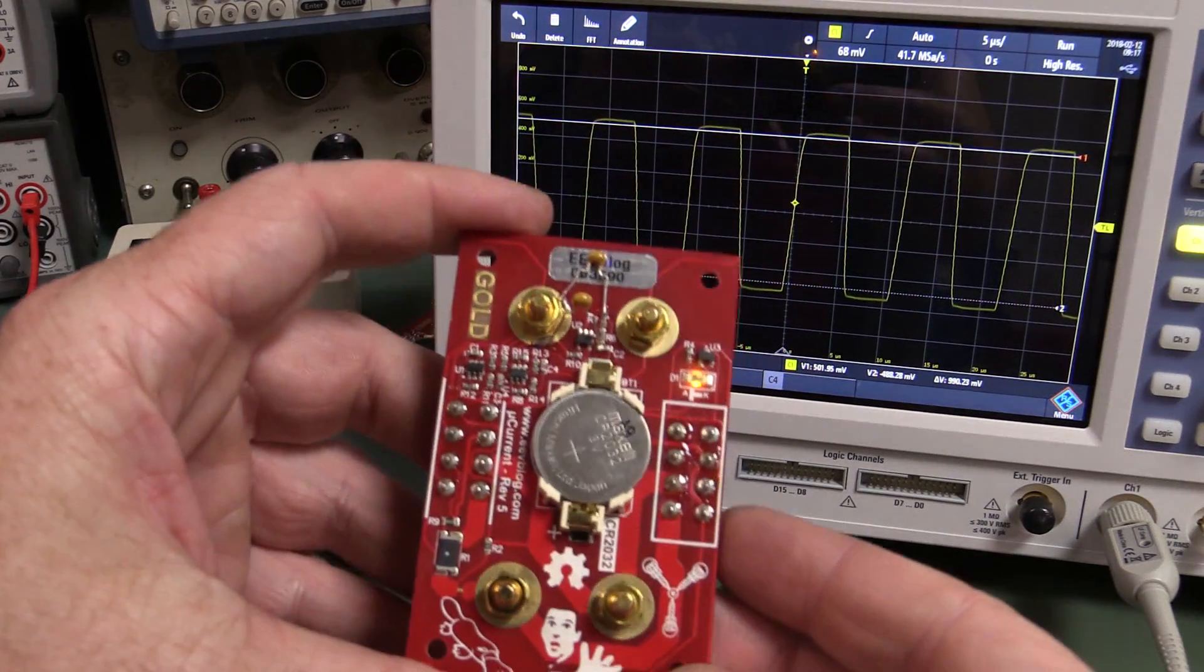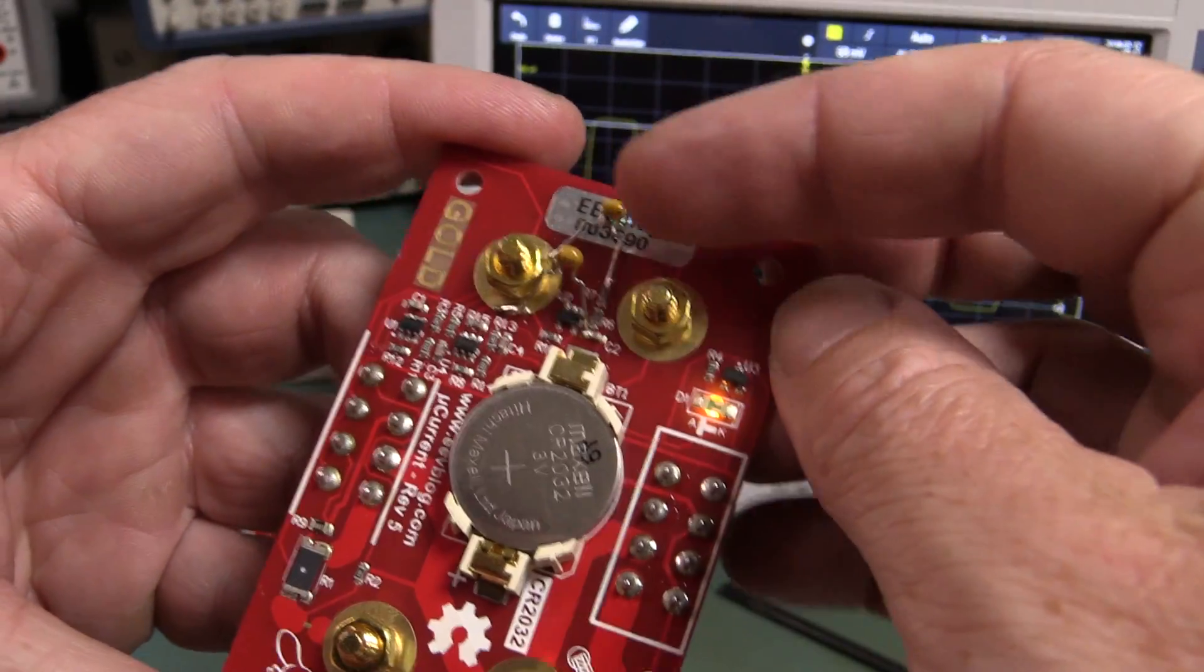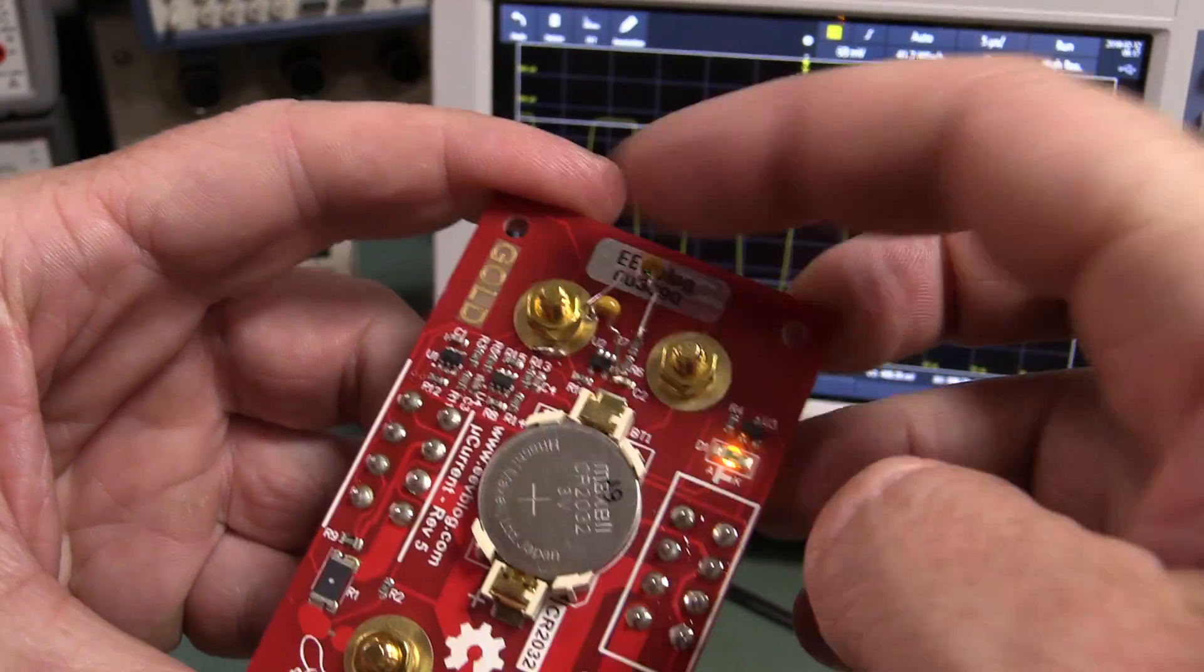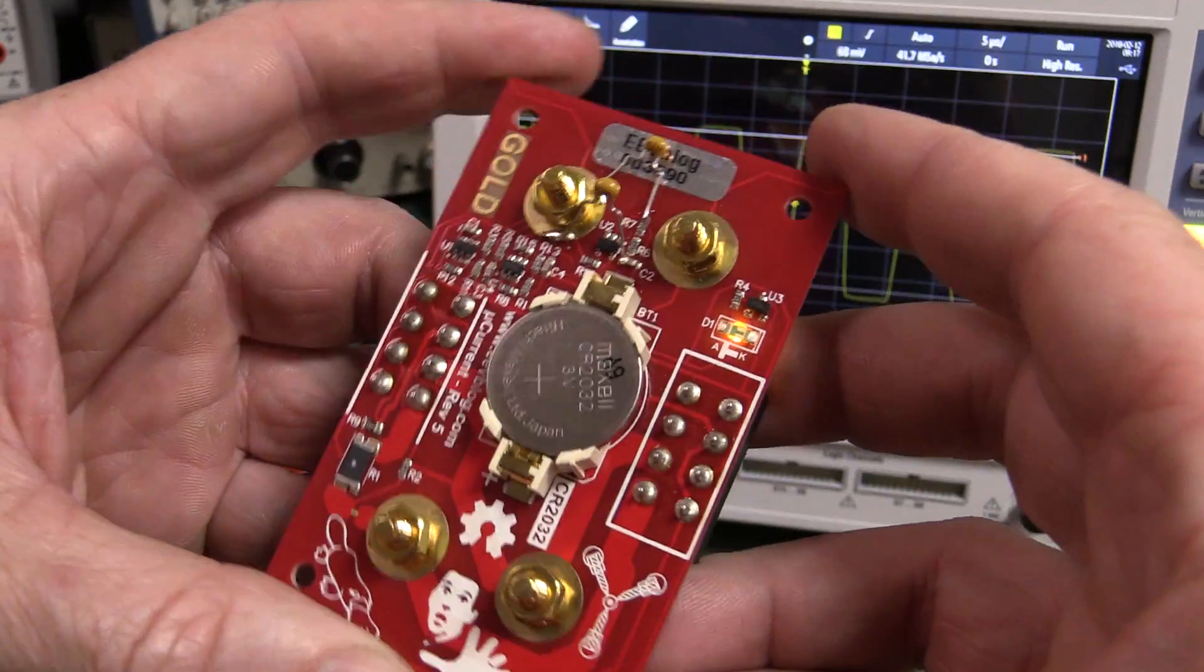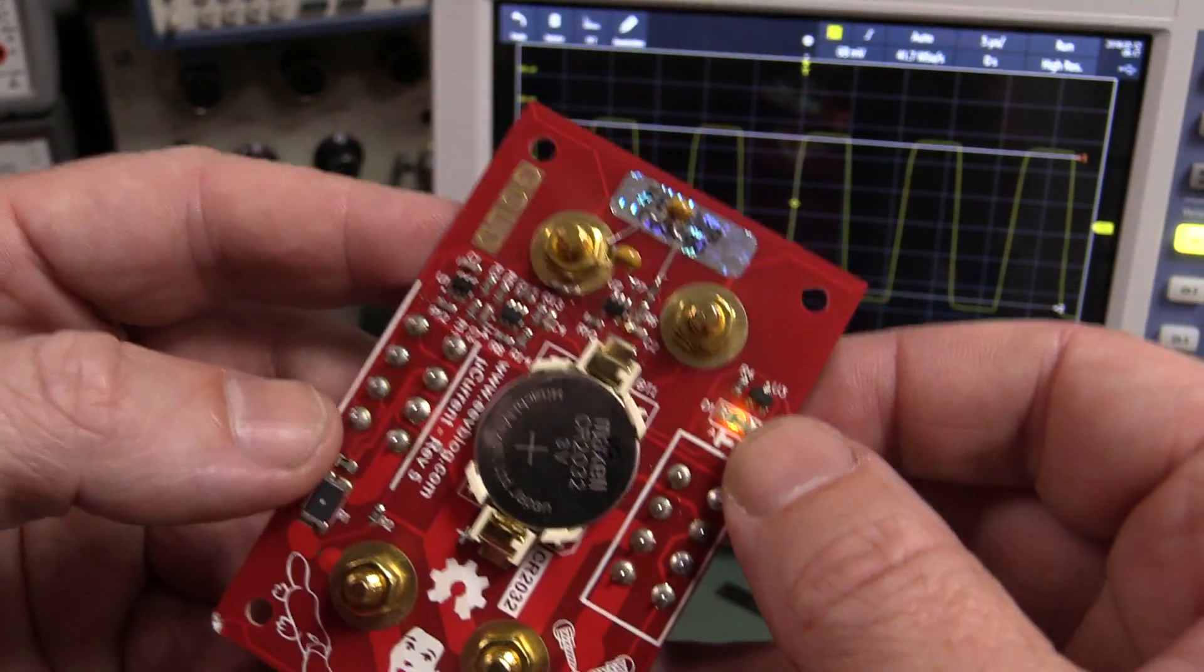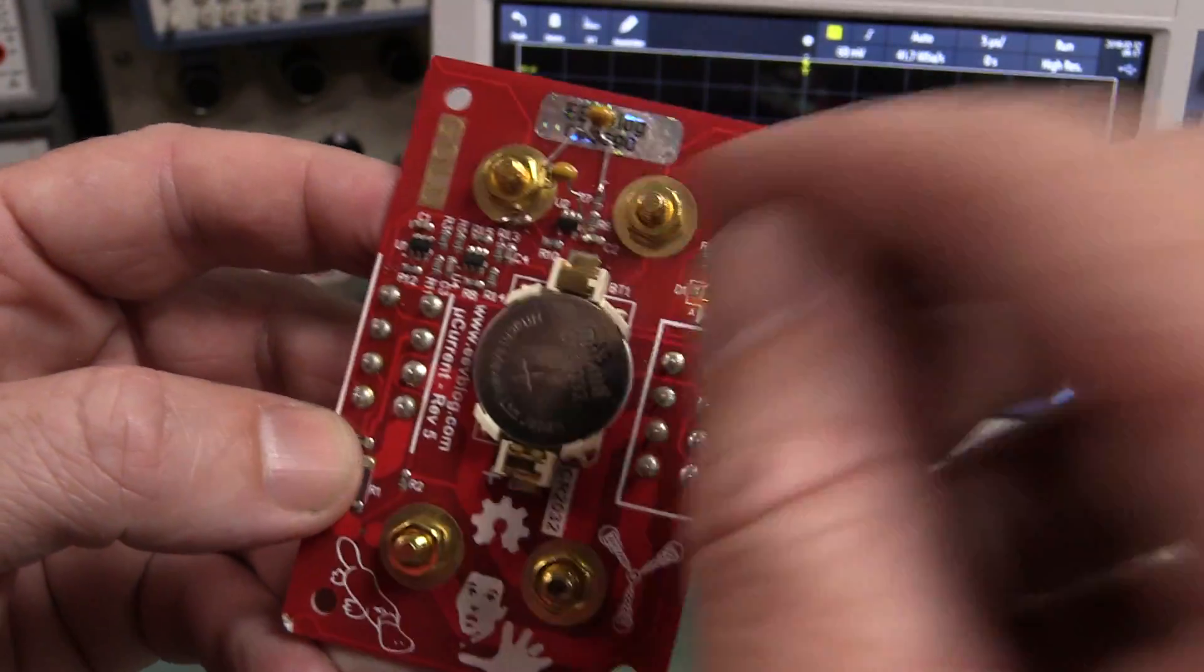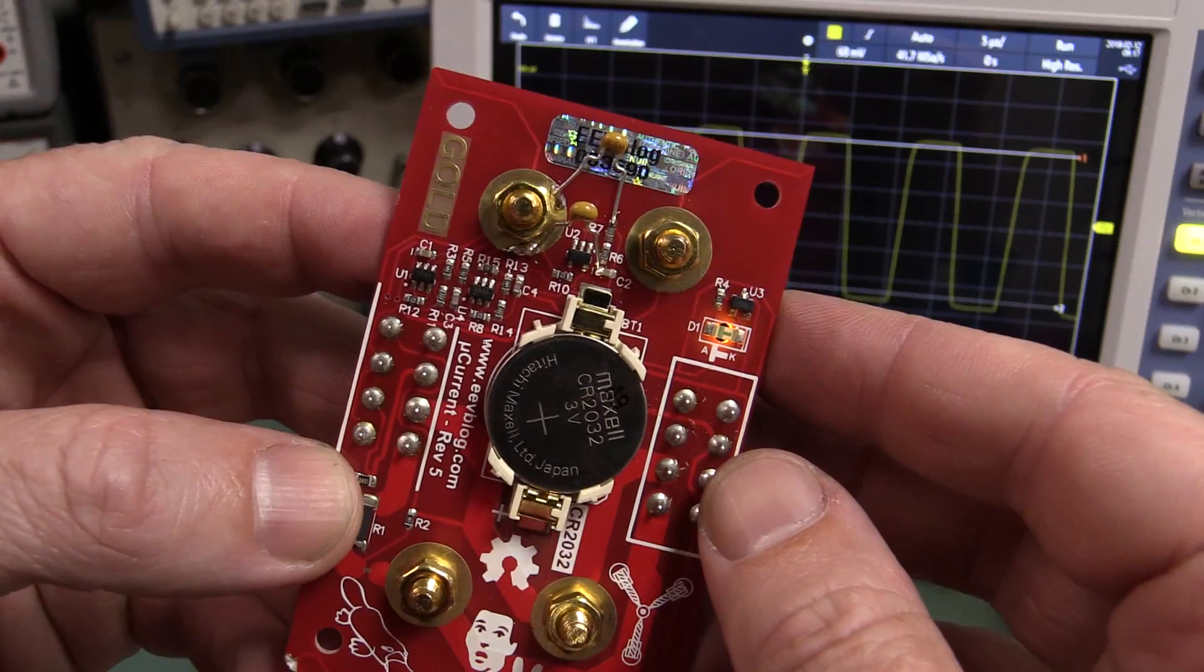Hi, in the previous video we took a look at adding bypass capacitors to the virtual ground rails, which effectively stopped the oscillation in a particular brand of chip, the LMV321 used on here.